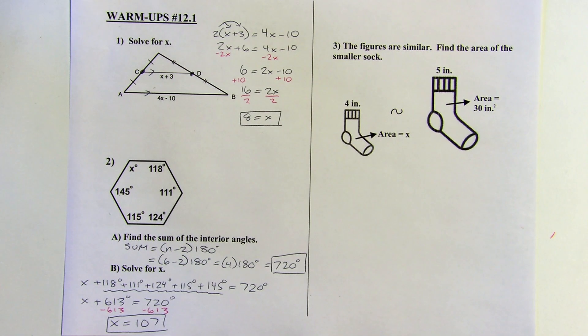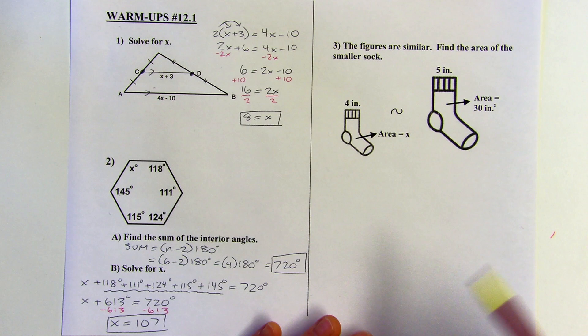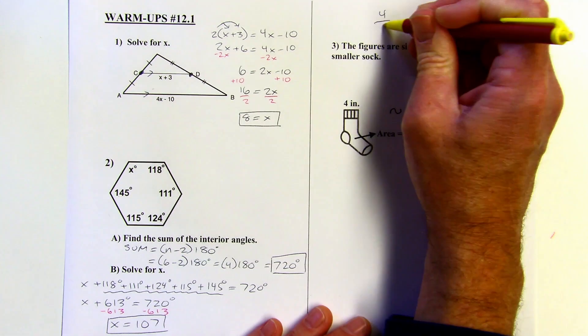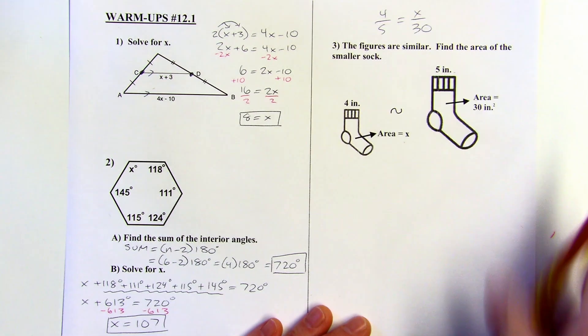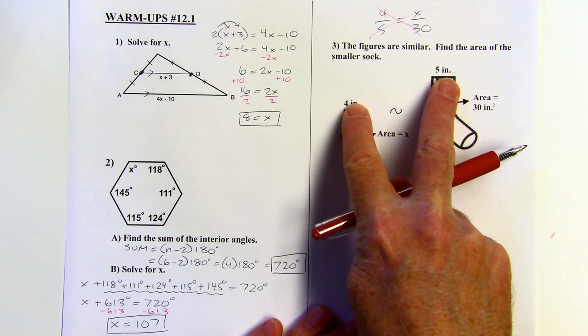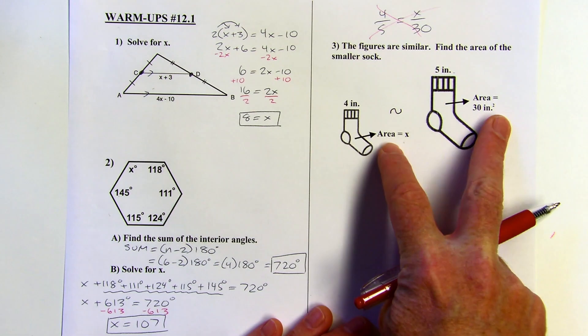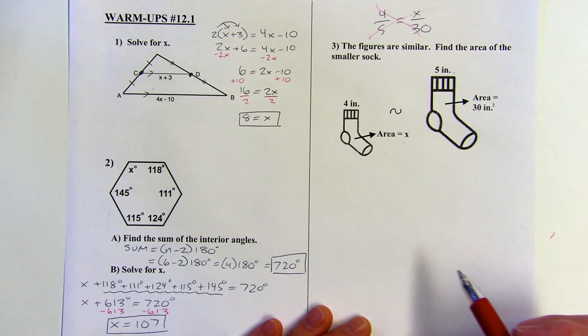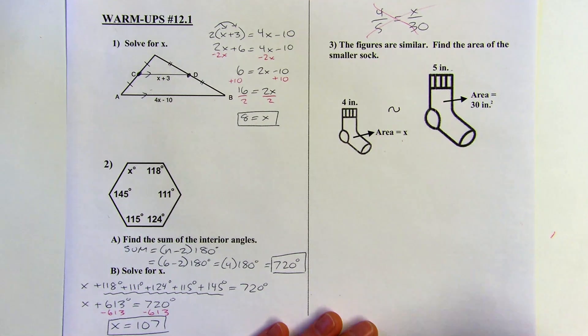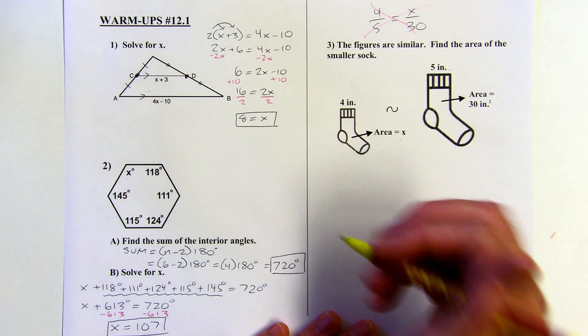So we're going to set up a proportion here and it's tempting to say, oh, 4 is to 5 as X is to 30. But that's actually incorrect. You don't want to do that because the 4 and the 5 are sides and these are areas. So they're going to be in a different ratio.